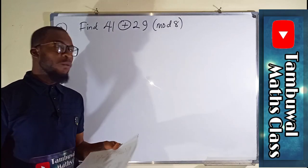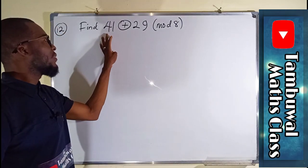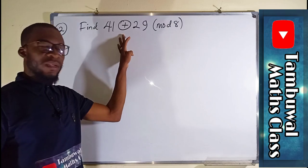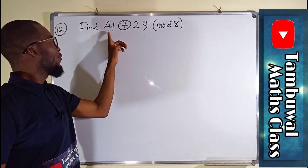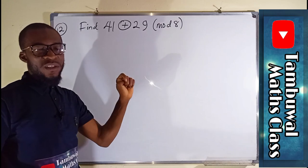Question number 12. We are asked to solve this. It's a modular arithmetic. We are asked to add 41 and 29 together.